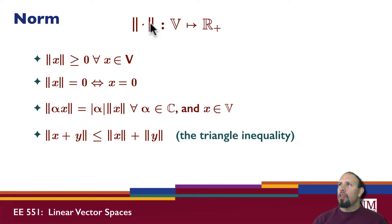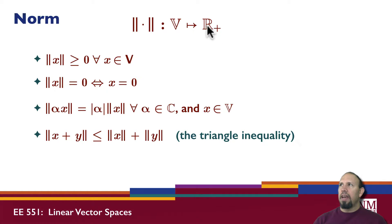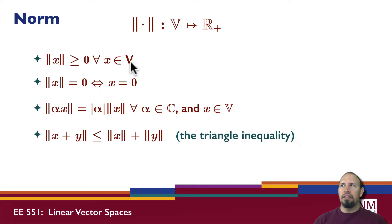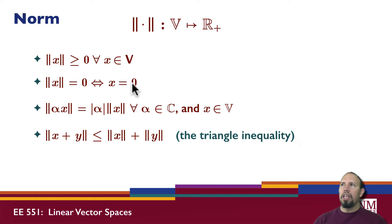Next we talk about the norm. The norm is a function that takes a single argument from a vector space and gives a non-negative real value — that's what R-plus means. Just like the inner product, the norm is defined by four properties. The first: the norm of x is greater than or equal to zero for all x. The second: the norm equals zero if and only if x equals zero.